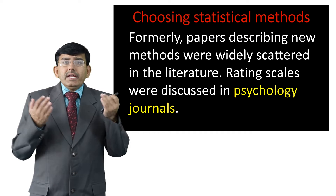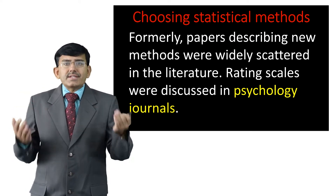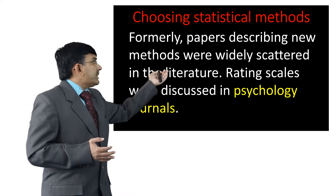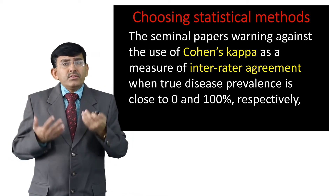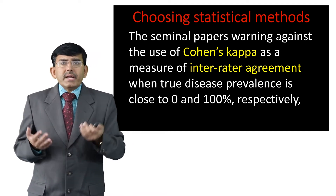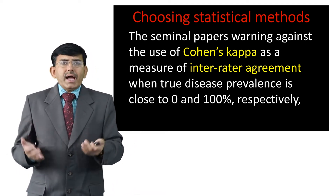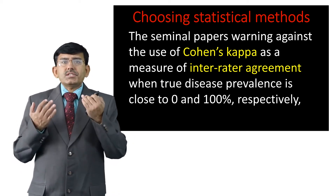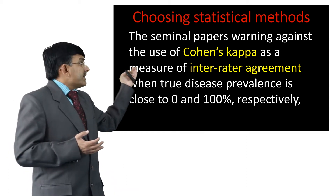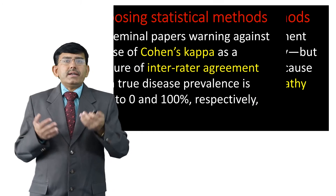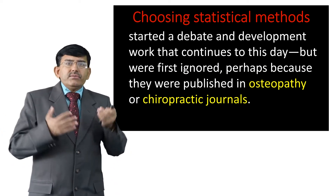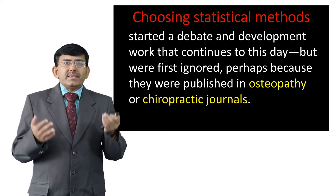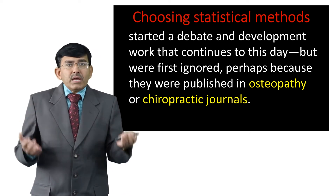Papers describing new methods were widely scattered in the literature. Rating scales were discussed in physiology journals, which are widely used for research review of medical information. The seminal papers warning against the use of Cohen's kappa as a measure of inter-rater agreement — when true disease prevalence is close to zero or 100% — started a debate and development work that continues to this day.